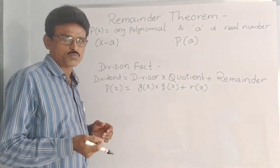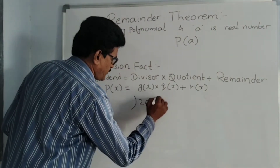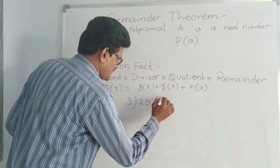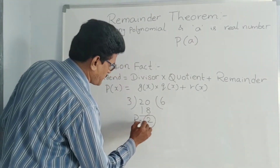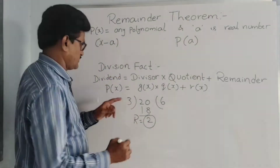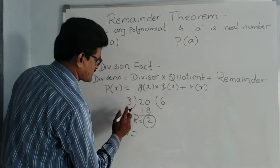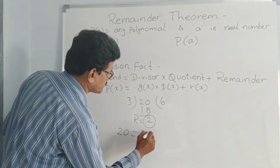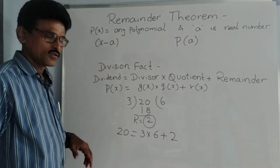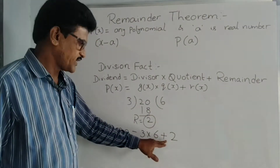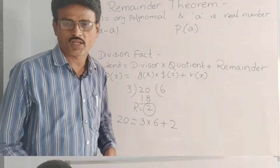Just I will do one small example. Suppose if 20 is there, we are dividing by 3. We are getting 3 times 6 is 18. Remainder is 2. 20 is dividend. P of x is this dividend. 20 equal to G of x, which is 3, into Q of x, which is quotient 6, plus R of x, which is remainder 2. So 18 plus remainder 2 gives 20. In polynomials also we will check this one.